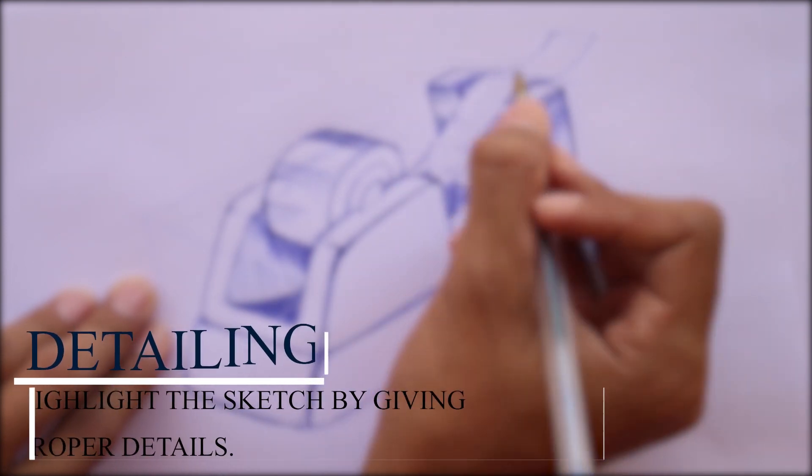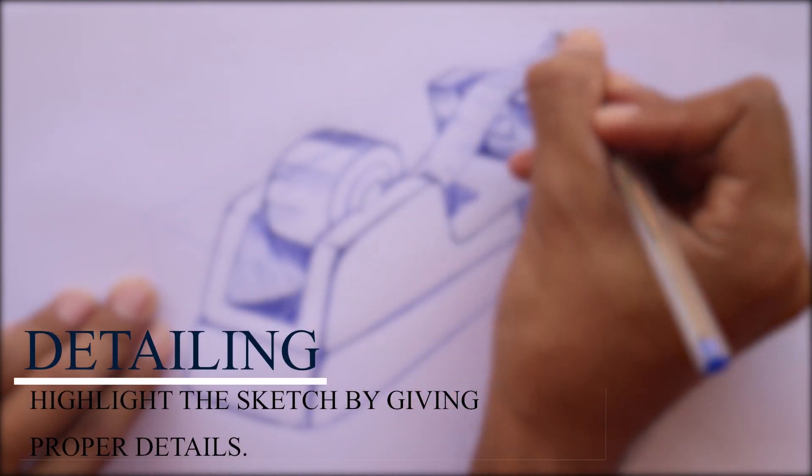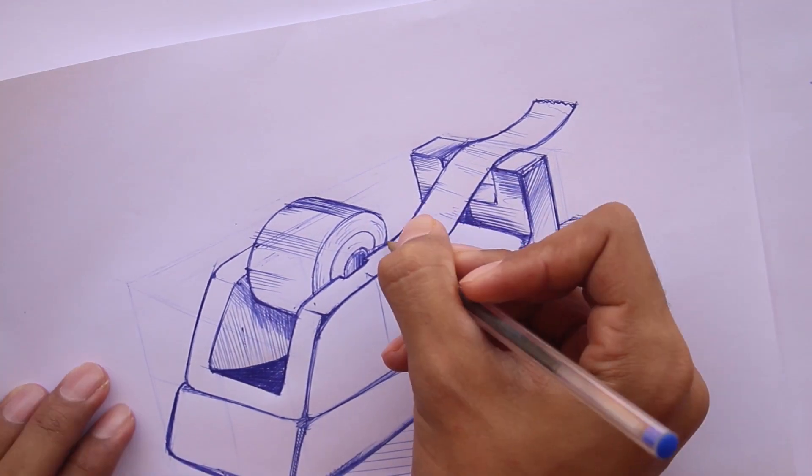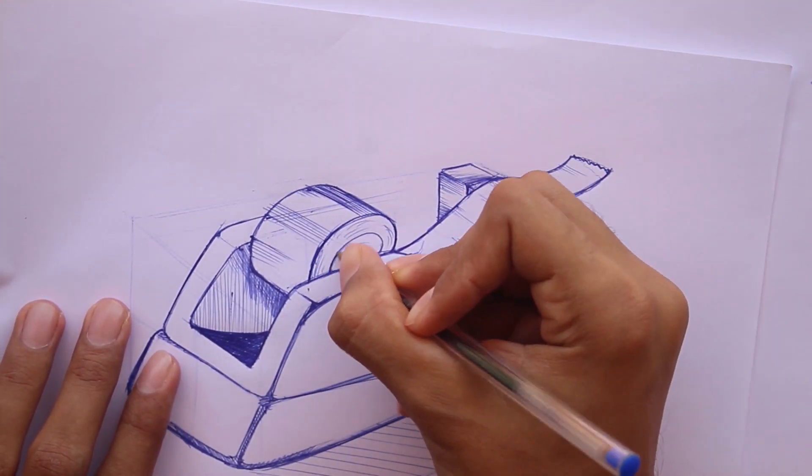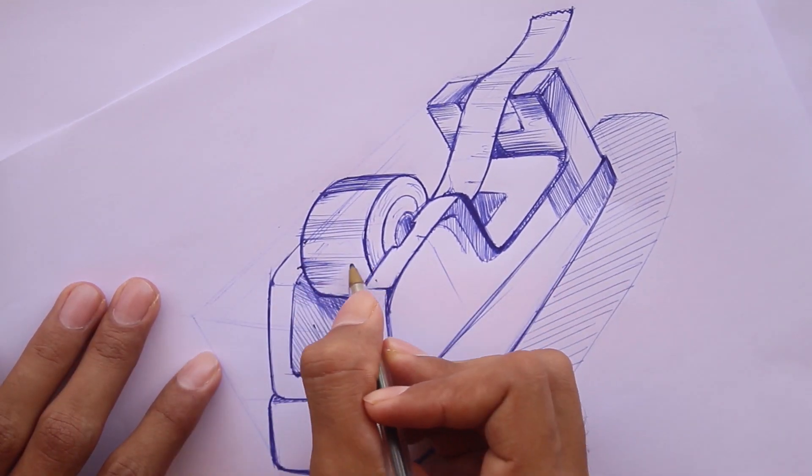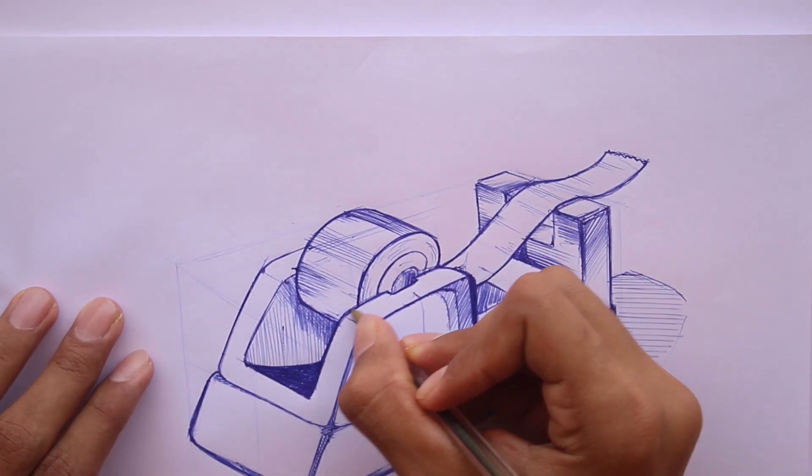And tip number 7: Detailing. Highlight the sketch by giving proper details. Follow the given tips and practice it. After following the tips, you can be able to draw or sketch like a product designer.